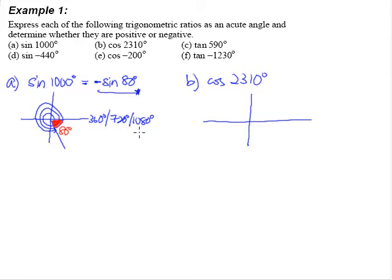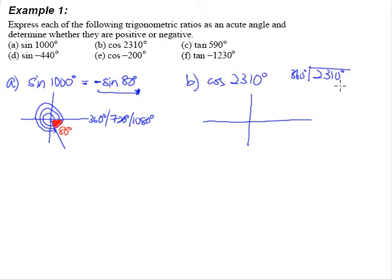By mental calculation, six rounds gives 2,160 degrees. But we have 2,310, so we take 2,310 divided by 360 degrees using a calculator. We get 6 and 5/12, meaning there are 6 full rounds with 5/12 of a round remaining.